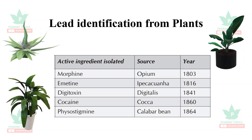Plants are rich sources of lead molecules. For example, morphine is the active ingredient obtained from opium in the year 1803. Emetine, obtained from ipecac, is still useful in cases of poisoning as an emetic, obtained in 1816. Digoxin was obtained from digitalis in the 18th century. Cocaine, obtained from coca, was used as a local anesthetic, introduced in 1860. Physostigmine, used as eye drops, was sourced from calabar bean and identified in 1864.